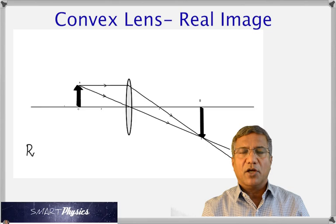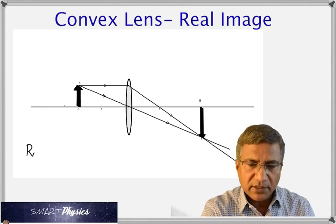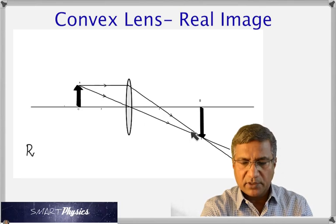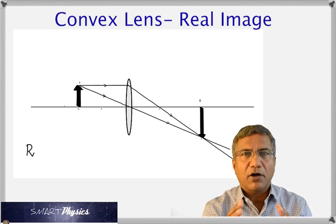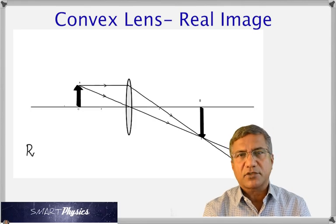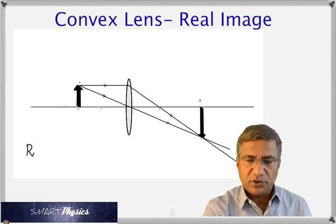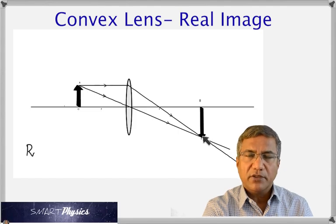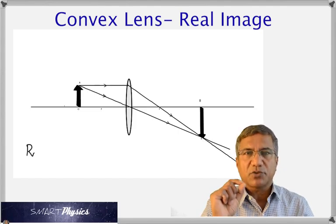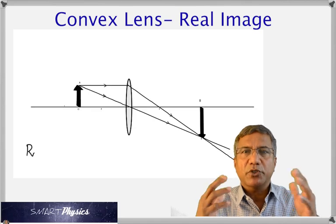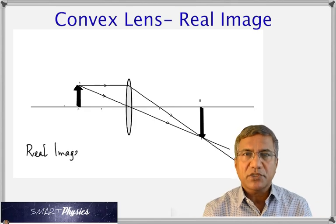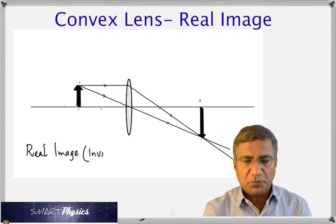The center of the lens is called the optic center. That ray has no refraction and goes straight through — in fact, that's the only point in the lens through which, when a ray passes, it has no refraction. We see that the two rays actually meet and intersect there. That means the image is real, meaning it can be produced on a screen.